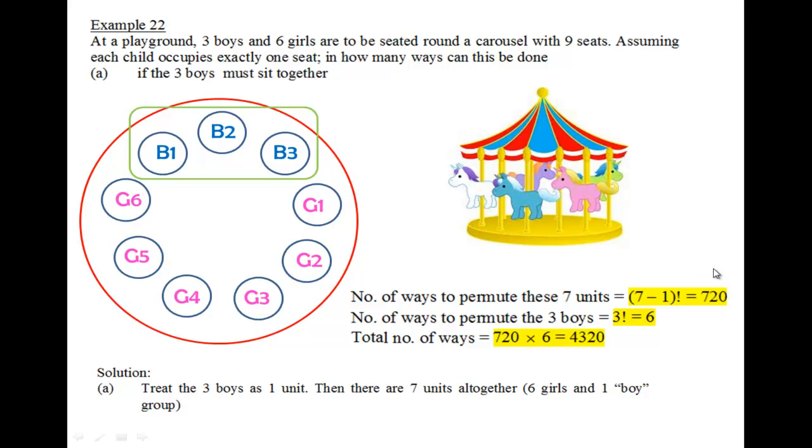And the number of ways to permute these 3 boys, because I still can move them around within that group, that will be 3 factorial. Therefore, the total number of ways will be 720 multiplied by 6, giving us 4320.